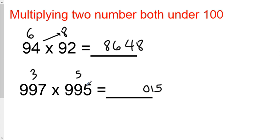Then you would take the smaller of the two numbers, 995, and you would subtract how much under a thousand the other number is. 995 minus 3 is 992.